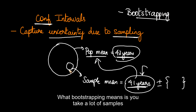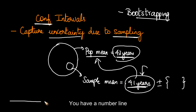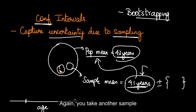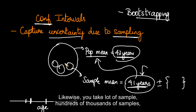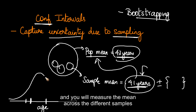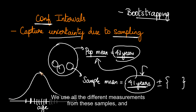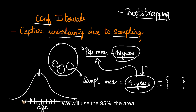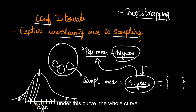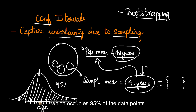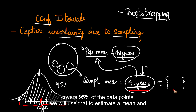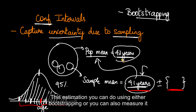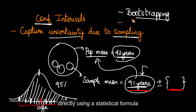What bootstrapping means is you take a lot of samples. You take one particular sample and measure the mean on the number line. Again you take another sample — that mean might be something different. Likewise, you take hundreds of thousands of samples and measure the mean across the different samples. We will use all the different measurements and take the 95 percent area under the curve, which occupies 95 percent of the data points. We use the mean value and the range where it covers 95 percent of the data points to estimate a mean and a confidence interval around the mean. You can do this using either bootstrapping or by measuring it directly using a statistical formula.